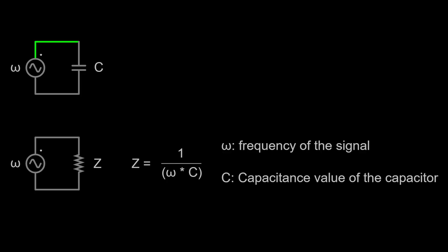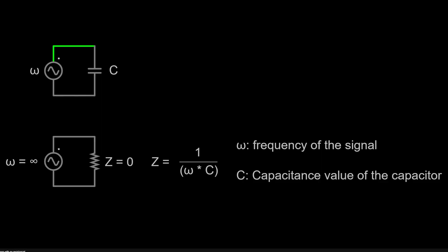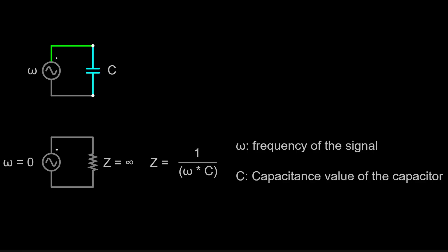An ideal capacitor can be modeled in the frequency domain using this equation, where omega is your frequency and C is the capacitance value measured in farads. With this equation, we can see that the capacitor's impedance is inversely proportional to the frequency of the signal. To a very high frequency signal, a capacitor will just look like a very, very low impedance — in fact, you can call it a short circuit in some cases. And then on the other end of the spectrum, to a very low frequency or even a DC signal, a capacitor will just look like an open circuit, something with essentially infinite impedance.